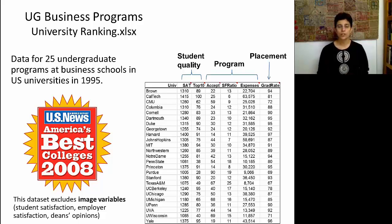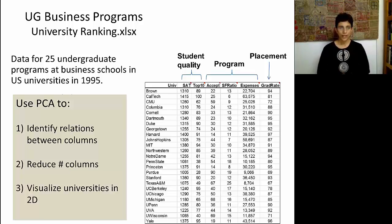We're going to get back and use the same example that we used in the cluster analysis sessions, where we have a bunch of measurements on programs, business undergraduate programs in the United States. And again, these measurements include information about student quality, and program quality, and placement information. Unlike clustering, where we were looking at the universities and trying to condense them into groups, now we're trying to see whether we can condense the different measurements into fewer columns. So again, we're going to use PCA in this case to try and identify relationships between these different measurements, to try and reduce the number of columns in terms of finding the information that's contained in them in a smaller number of measurements. And thirdly, we want to be able to visualize all these universities on a 2D plot, so that we can see which are close or different in terms of these particular measurements.